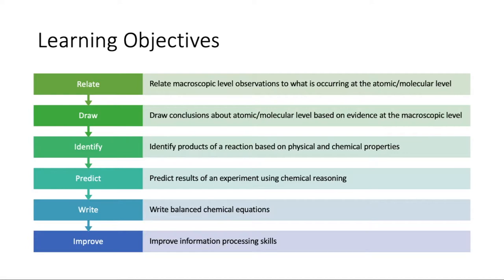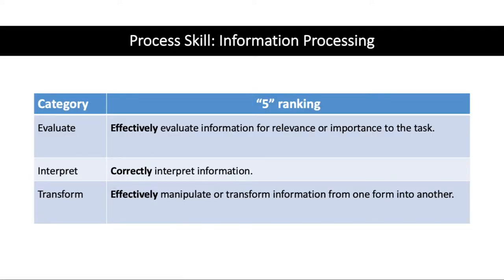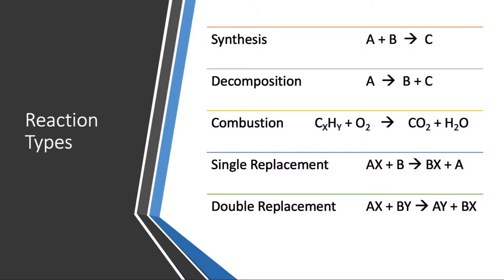Our process skill for today is going to be information processing, similar to what we did last week — interpreting macroscopic information and seeing what's happening at the molecular level. But this time you have a lot more reactions to do. Last time we just did single replacement, but today we're going to be looking at all five types.